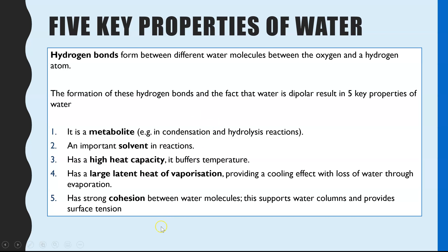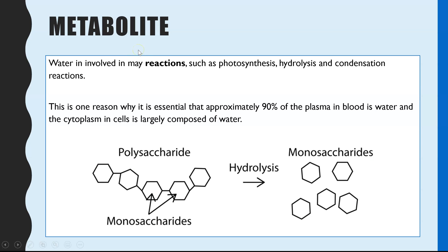First, water as a metabolite — it's involved in lots of chemical reactions or metabolism. Examples include water being used in photosynthesis, in photolysis, and in hydrolysis and condensation reactions, which you may have already covered in biological molecules. I'll link some videos relating to photosynthesis and hydrolysis and condensation reactions.